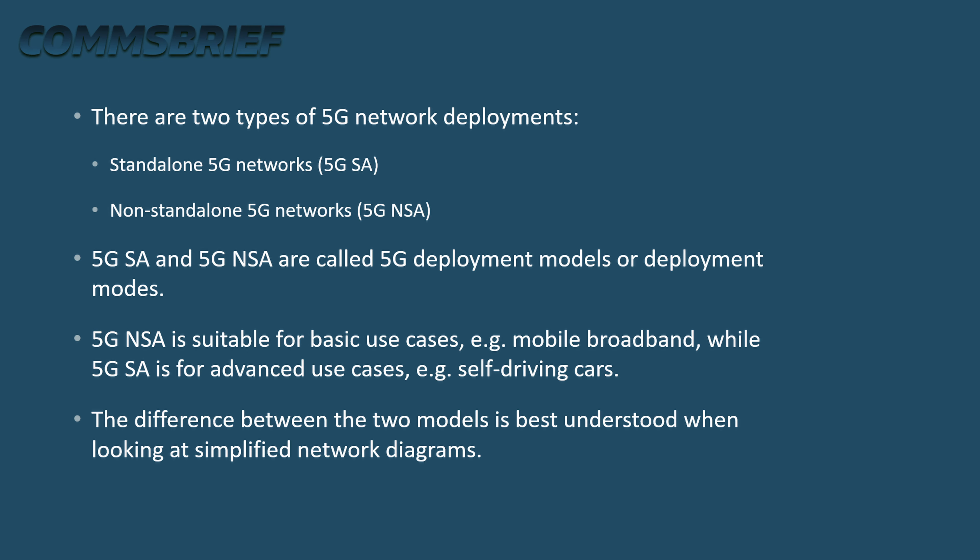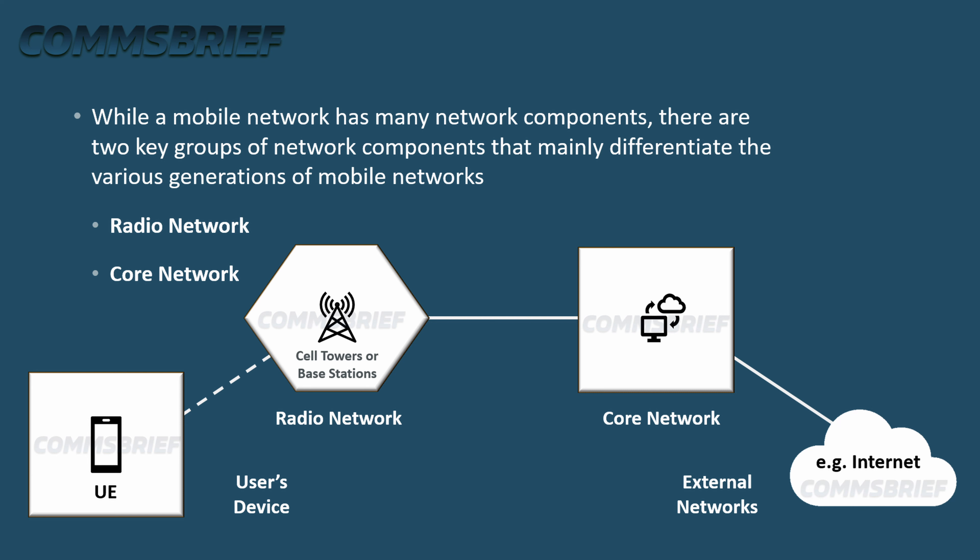There are two types of 5G network deployments: standalone 5G networks (5G SA) and non-standalone 5G networks (5G NSA) — called 5G deployment models or deployment modes. 5G NSA is suitable for basic use cases like mobile broadband, while 5G SA is for advanced use cases like self-driving cars. While a mobile network has many components, two key groups mainly differentiate the various generations: the radio network and the core network.